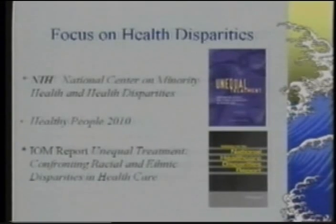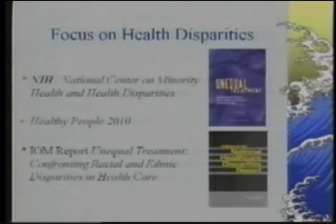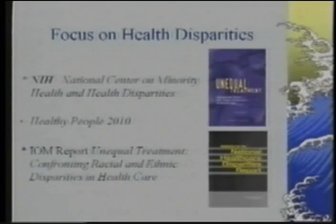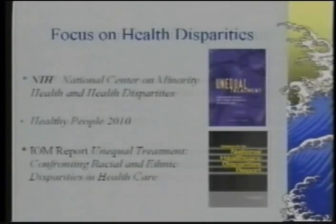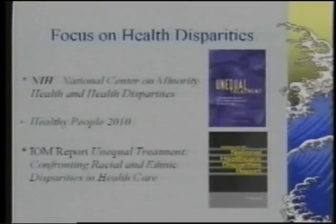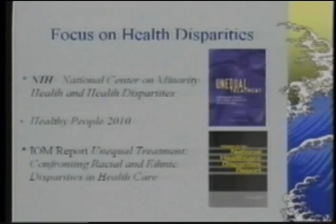Important institutions that guide our work as physicians have made it clear that the elimination of racial and ethnic health disparities is preeminent. The National Institutes of Health has a Center on Minority Health and Health Disparities. The Healthy People 2010 document states there should be no difference in health outcomes based on skin color or heritage by the end of 2010. The report on equal treatment confronting racial and ethnic disparities helps us understand that we bring our own biases, stereotypes, and prejudices to our encounters as physicians, and it's work we must pay attention to and change.